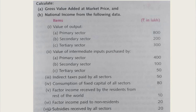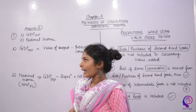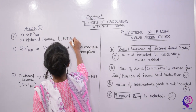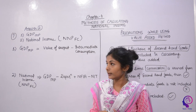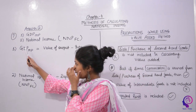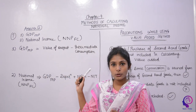Now let's do Illustration 2, given on page number 87 and on your screen. We need to calculate: first, GDP at Market Price; and second, National Income, which is NNP at Factor Cost. For GDP MP, we use the formula: Value of Output minus Intermediate Consumption, where Value of Output covers all three sectors.